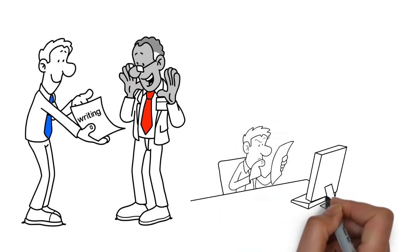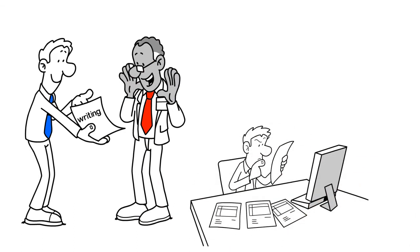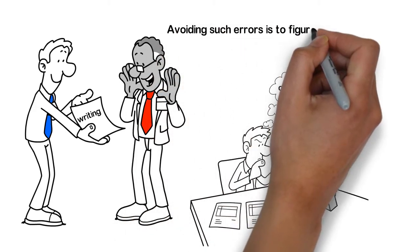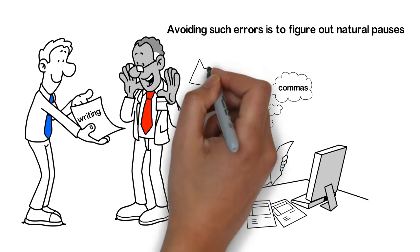A conventional error often committed by most writers is while pausing in sentences, in terms of using commas. One way of avoiding such errors is to figure out natural pauses in a sentence while speaking.